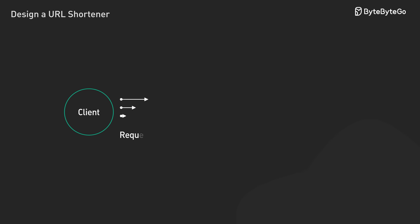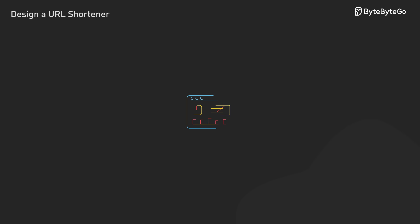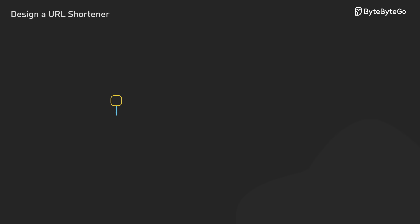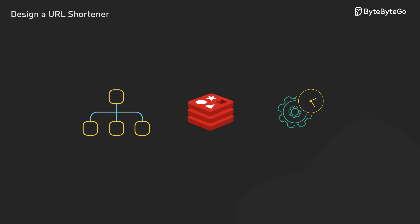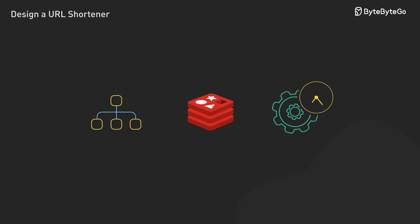And that's just the beginning. In the real world, you also need to think about rate limiting so people can't spam your service, analytics to track how many people click each link, and security to block malicious URLs. What started as 'make this URL shorter' becomes a lesson in distributed systems, caching, database scaling, and performance optimization.